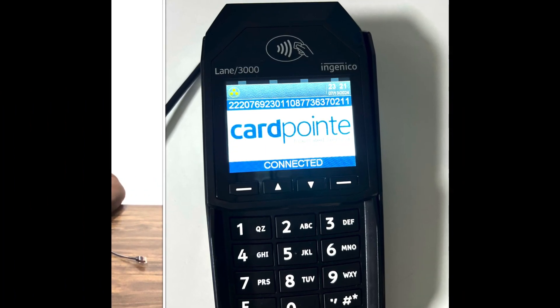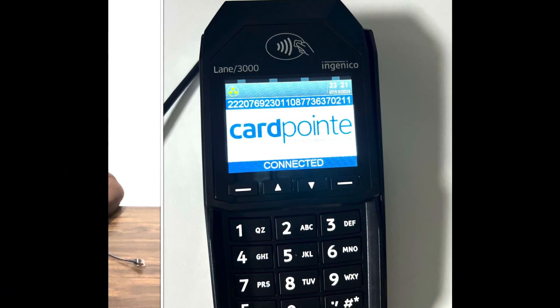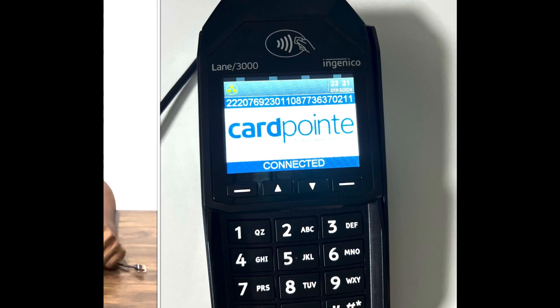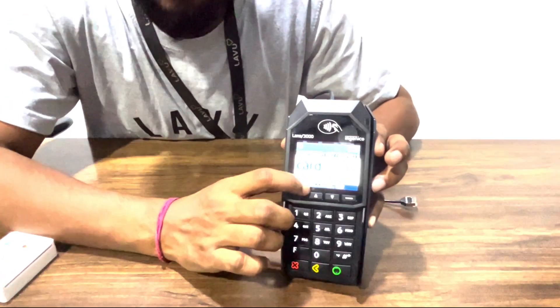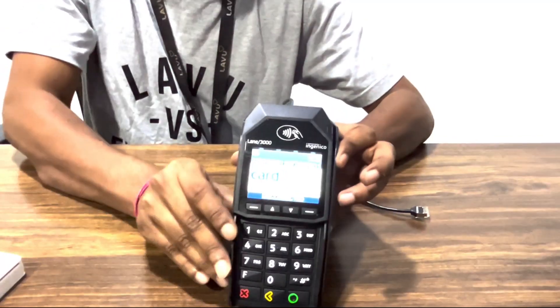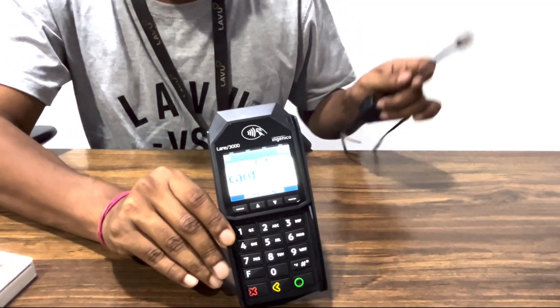Starting with the Lane 3000, whenever we are using the card reader, we want to see the word connected displayed on the screen. In the event where you see disconnected, check the attached ethernet cable and make sure it is firmly plugged into your router or switch.